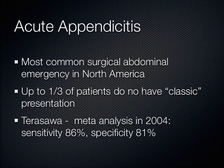Ultrasound is not as good as CT scan for appendicitis, but it's okay. The sensitivity is maybe 86% and specificity 81% after a meta-analysis, in the hands of sonographers showing the image to radiologists. Going forward, I think ultrasound in the hands of the clinician who's actually evaluating the patient at the bedside — who knows exactly where the patient's pain is — will have improved test characteristics.